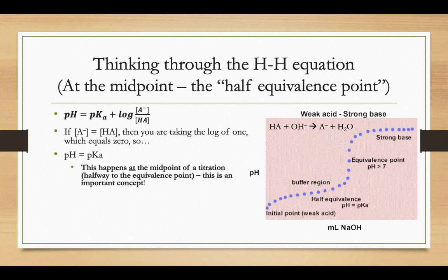So for example, let's say you find that it takes 40 milliliters of base to reach your equivalence point. It would take 20 milliliters, half that amount, to be at your midpoint, half of your weak acid turning into the A minus instead. That midpoint is an important point on that graph.